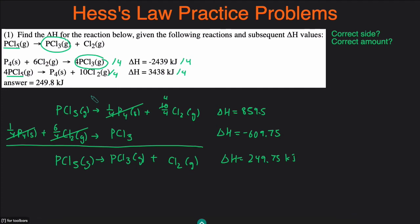So that's the full process of writing out the reaction. But if you can figure out what to do with each of the given reactions, then you don't have to write it out. If you can determine that you just divide the first reaction by 4 and the second reaction by 4, you can just compute the delta H values and add them together to get the same answer without writing out the entire reaction. Let's take a look at the next example.